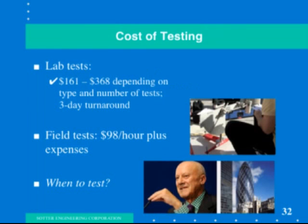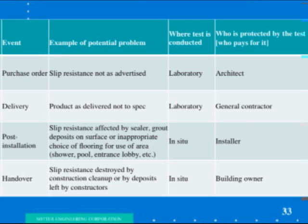The cost of testing flooring before it is installed is minimal compared to dealing with a slip and fall lawsuit. Tests through Safety Direct America can cost from $179 to $290 per sample depending on the test method requested. A standard pendulum test is $230, which includes a signed and stamped certified test report. Tests at your location are based on time and expenses, and we've tested floors in every corner of the USA and beyond. Ideally, you would test potential flooring candidates before they are written into the plans, then again after installation as construction cleanup can often affect slip resistance, and then again just before turning over the building.